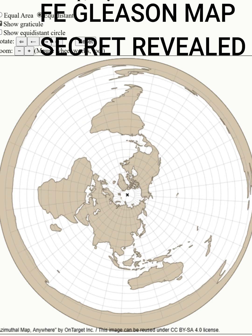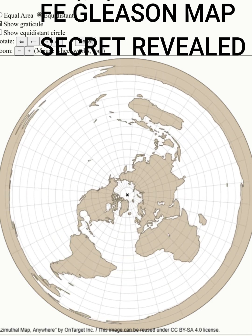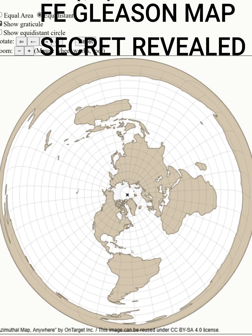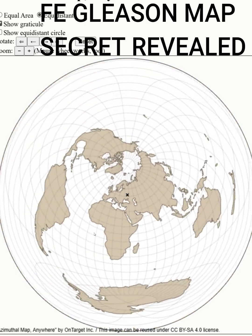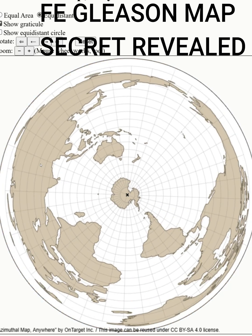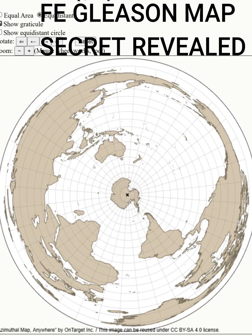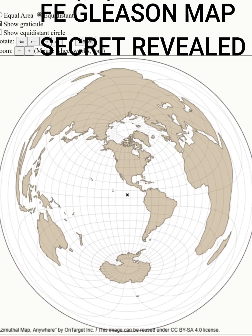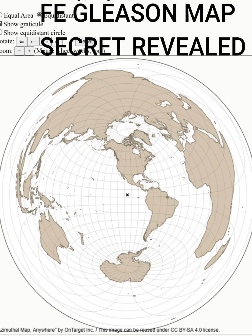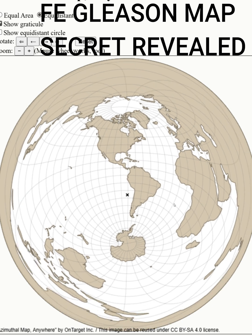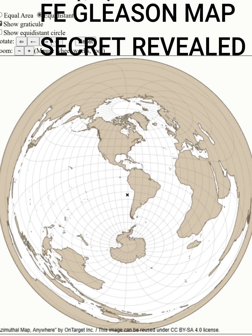Check this out — this is the azimuthal equidistant centered on the North Pole. This website lets you see it live. This is it centered on the South Pole. I'm going to show you something you never knew before. Unknown to everyone, it seems — what we're looking at with the azimuthal equidistant is the inside of a sphere.